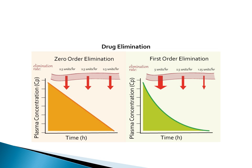In zero-order elimination, a constant amount of drug is excreted each period — for example, 2.5 units per half-life regardless of the total amount. This occurs because the enzymes responsible for elimination become saturated. If you give 100 mg or 200 mg, there are not enough enzymes to eliminate 50% or 40% per unit of time.